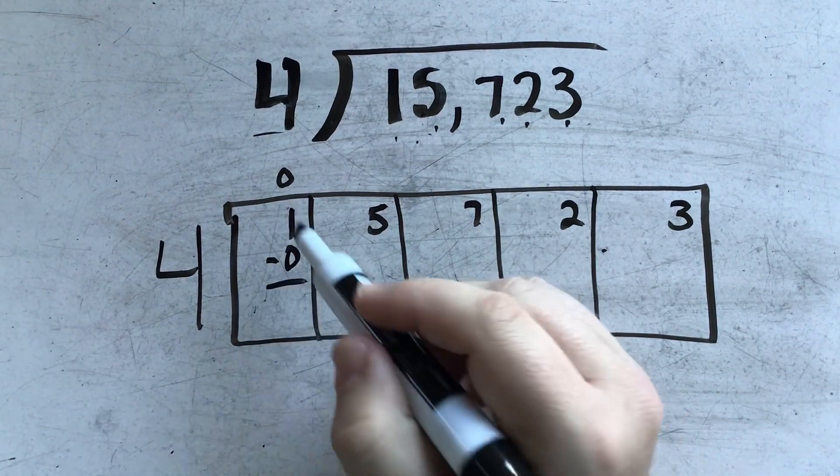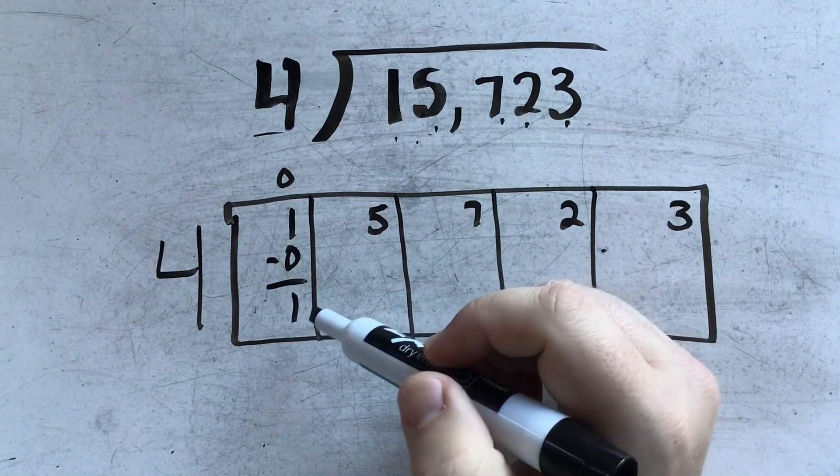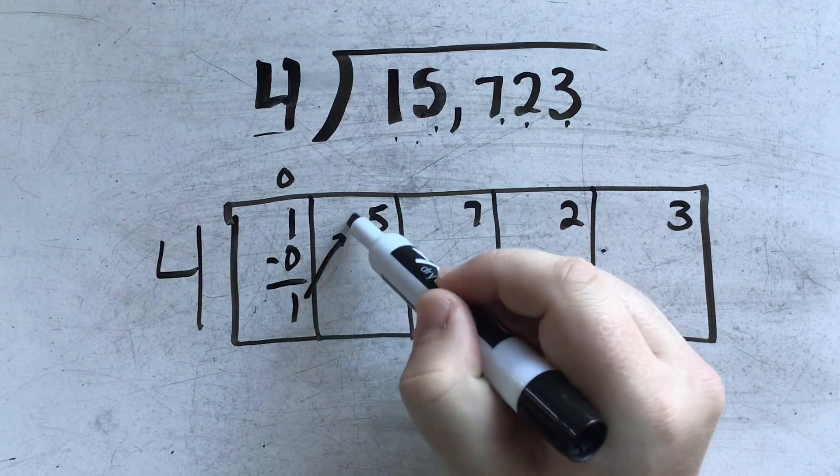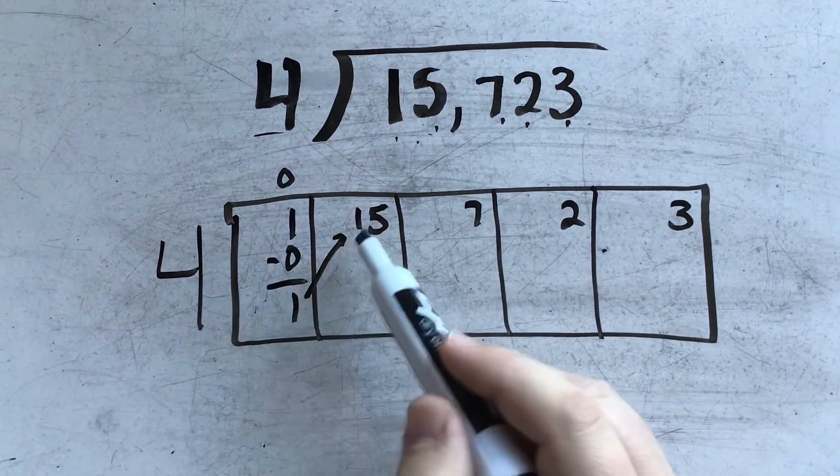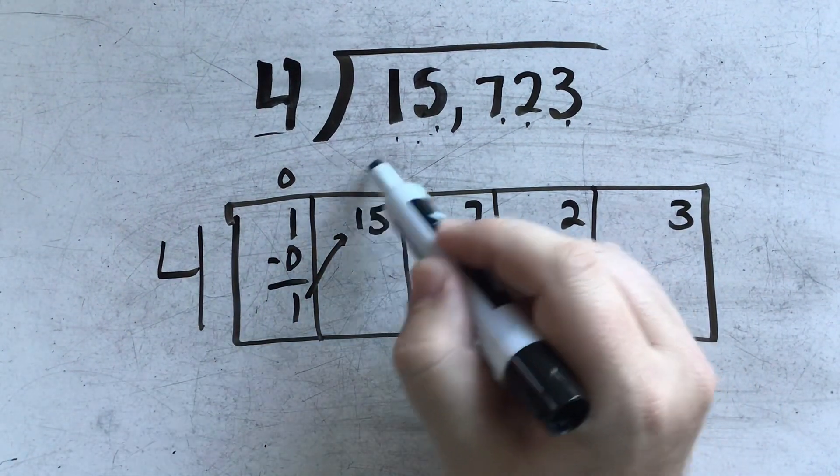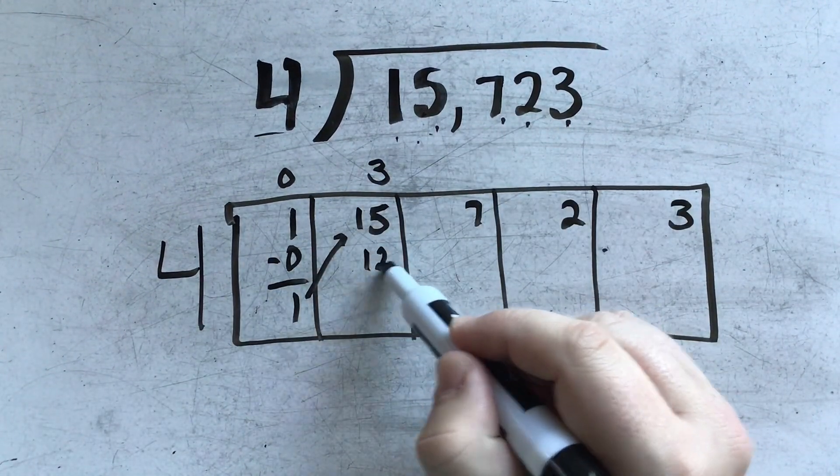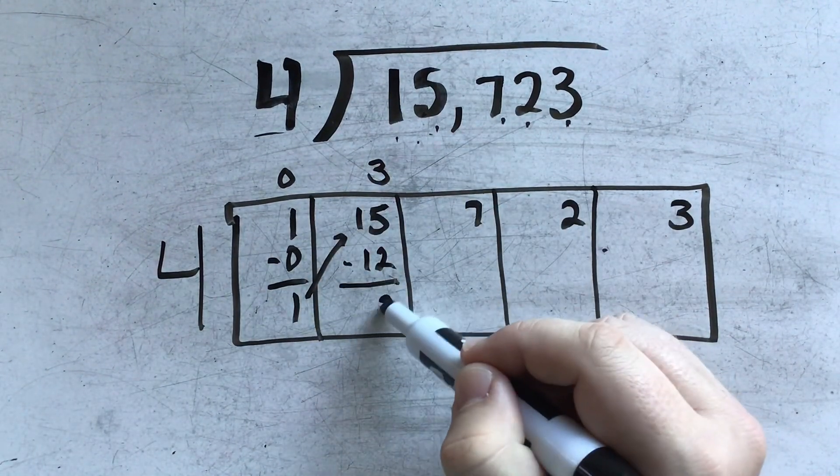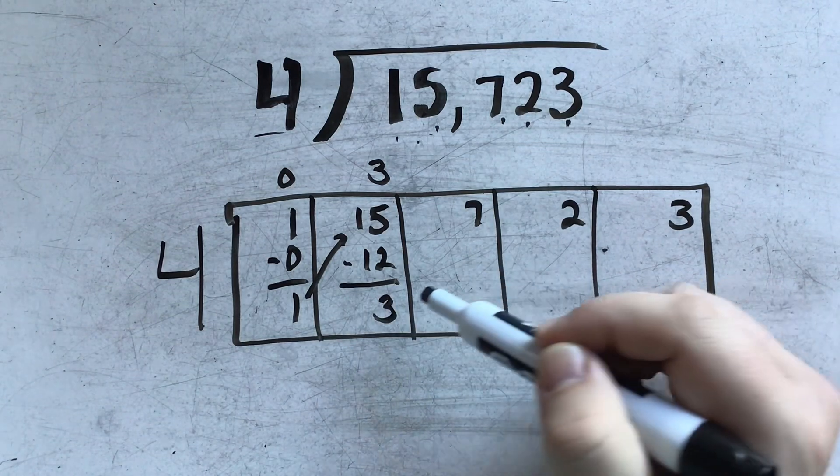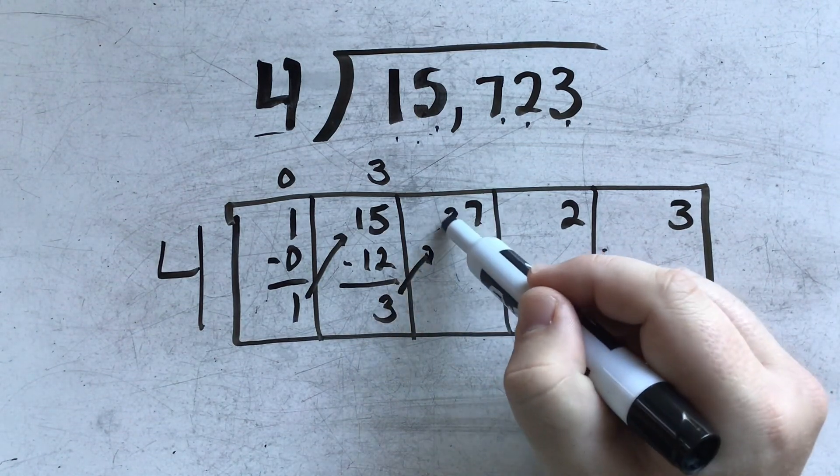4 times 0 is 0, and when I subtract, there's nothing, or there's one left over. So I take that 1 and I just move it next door. And now 4 goes into 15, 3 times. 3 times 4 is 12. And when I subtract, there's 3 left over.